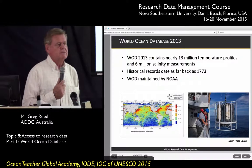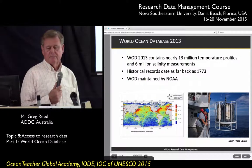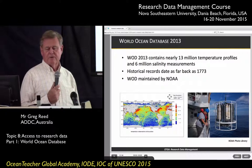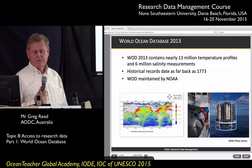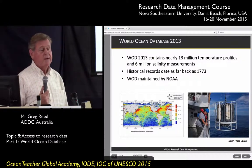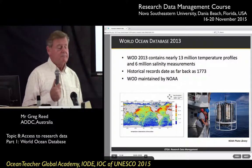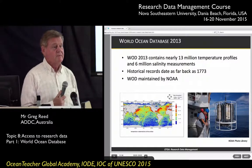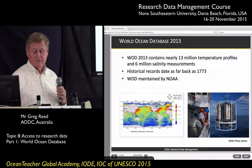The latest version of the World Ocean Database is 2013. It has over 30 million temperature profiles and 6 million salinity measurements. The historical records go way back to 1773, and this database is maintained by NOAA. People were collecting data in the days of sailing ships, and that data is available through the World Ocean Database.